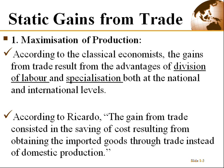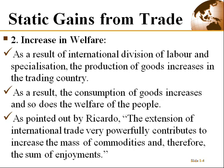So the first static gain is maximization of production — more things are produced. The second one is increasing welfare. To keep it simple, when more things are being produced, cost of production is lower, people are able to buy those things and enjoy more. International trade, given the division of labor and specialization, helps in increasing welfare — people produce more and trade it.